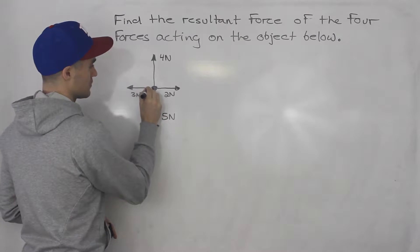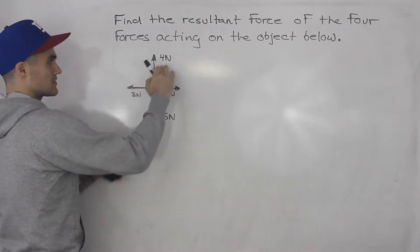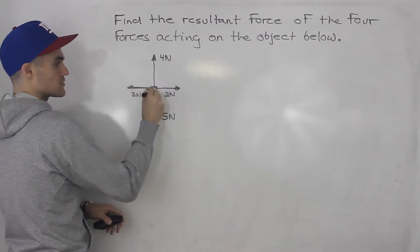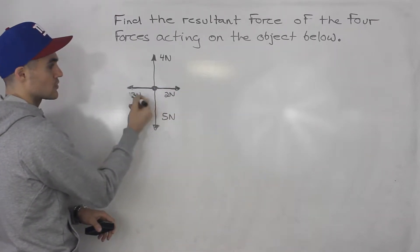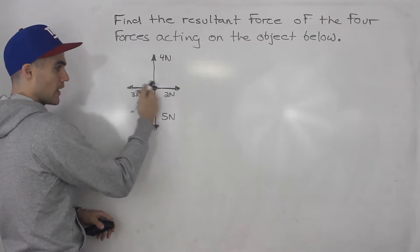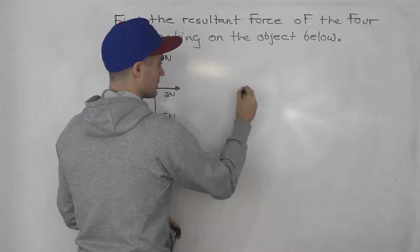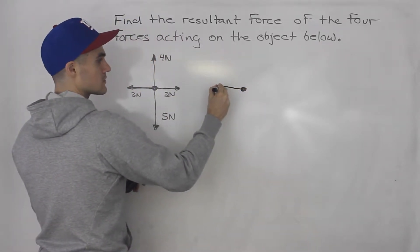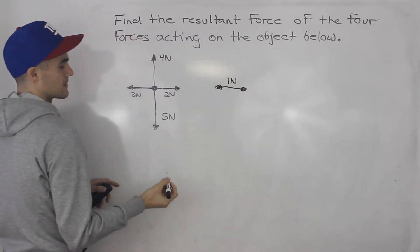So notice, for example, we got three newtons acting this way. So let's forget about the four newtons and the five newtons for now. We got three newtons pulling the object this way, two newtons pulling the object this way. So what's the resultant between these two forces going to be? Well, the object's going to be pulled by one newton this way. So let's draw this object again. And the resultant between these two is just going to be one newton this way.